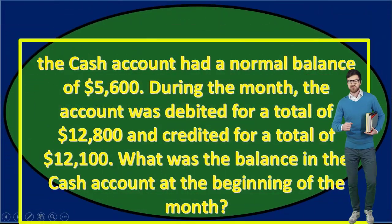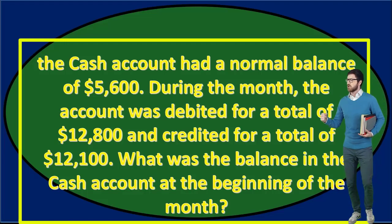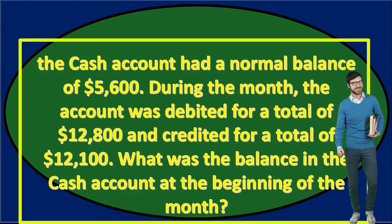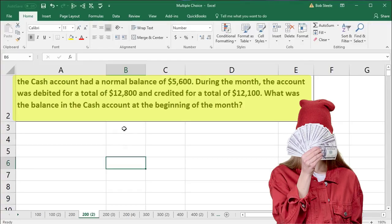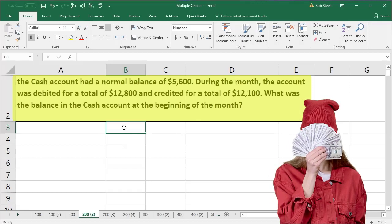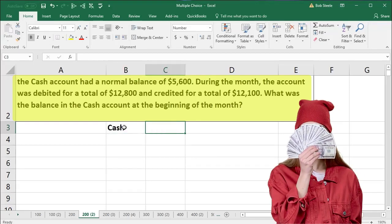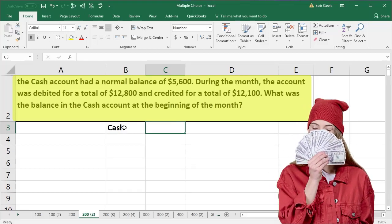First question: the cash account had a normal balance of 5,600. During the month, the account was debited for a total of 12,800 and credited for a total of 12,100. What was the balance in the cash account at the beginning of the month? The traditional way to set up these types of accounts is with a T account, so I'm going to put a T account here. We could format these and think about them in different ways, but the point is we're looking at debits and credits.